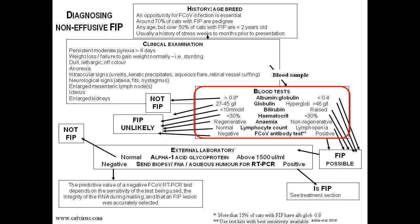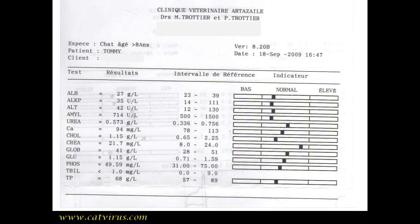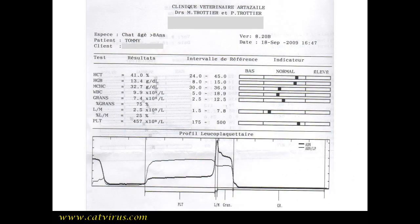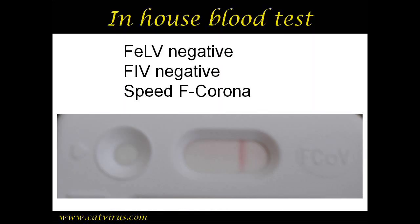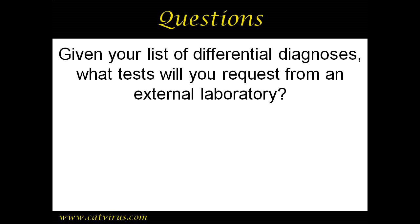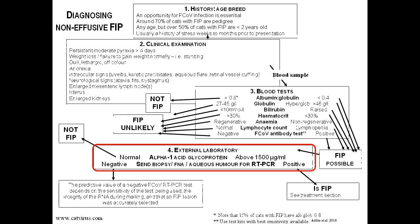Step three of the FIP diagnostic algorithm is the in-house blood results. These are the in-house biochemistry results. These are the in-house hematology results. These are the results for FeLV, FIV, and feline coronavirus antibody. Question: given your list of differential diagnoses and the conclusions you have drawn thus far, what tests will you be requesting from the reference laboratory?